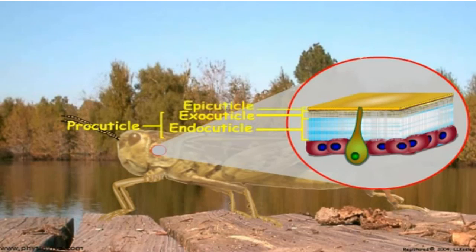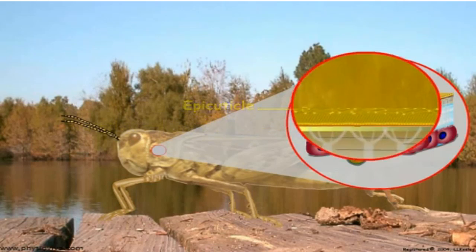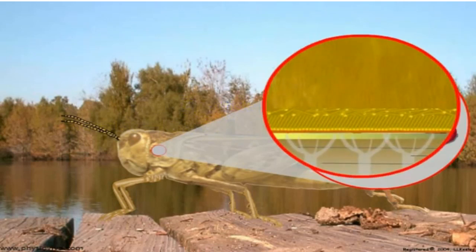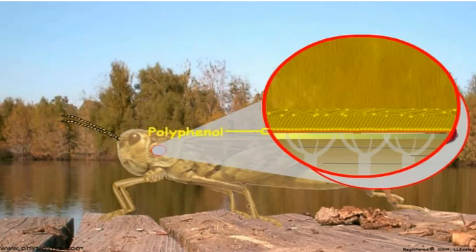Above the exocuticle is the epicuticle. The epicuticle is thin and consists of four layers. Cuticulin is the innermost epicuticular layer and is composed of sclerotized proteins and lipids. Some layers of the cuticle may be absent in regions of the body of some insect species, but the cuticulin layer is always present. A polyphenol layer is sometimes present above the cuticulin layer that may serve as a source for the phenols used in tanning.